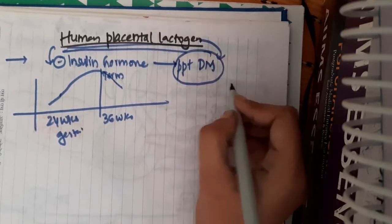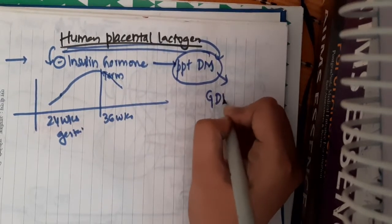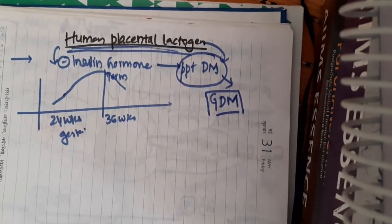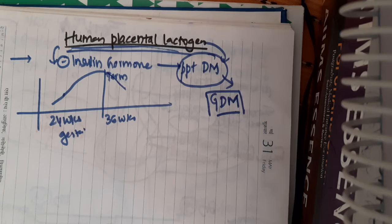So this human placental lactogen is the hormone which will precipitate the patient to diabetes mellitus. That is, gestational diabetes mellitus can be caused because of this human placental hormone as it inhibits the insulin hormone.